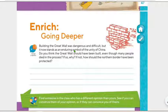And here it says, building the Great Wall was dangerous and difficult, but it now stands as an enduring symbol of the unity of China. Do you think the Great Wall should have been built, even though many people died in the process? If so, why? If not, how should the northern border have been protected?